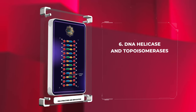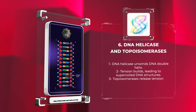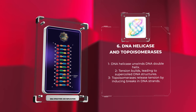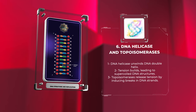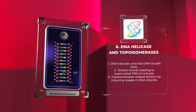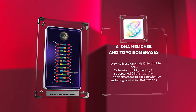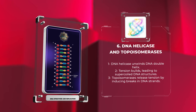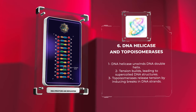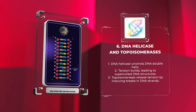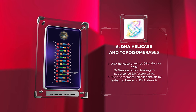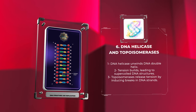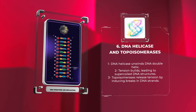To unwind the DNA double helix and facilitate replication, a protein called DNA helicase is vital. This enzyme breaks the hydrogen bonds between the base pairs, separating the DNA strands ahead of the replication fork. As DNA unwinding occurs, tension builds up ahead of the replication fork, leading to the formation of supercoiled DNA structures. Topoisomerases release this tension by inducing reversible breaks in the DNA strands, allowing them to unwind and preventing excessive coiling.